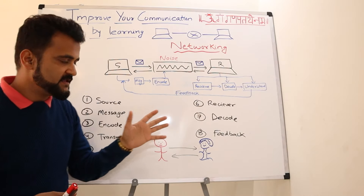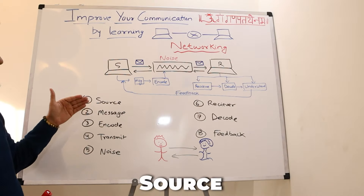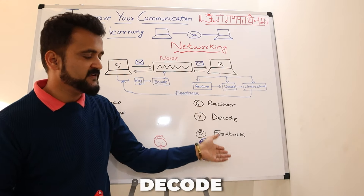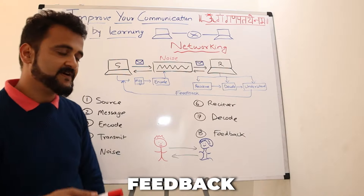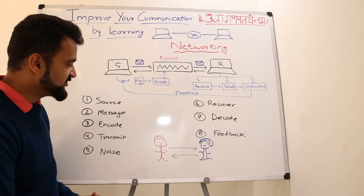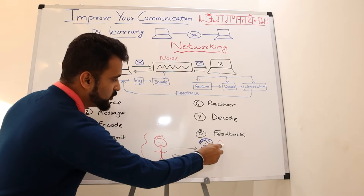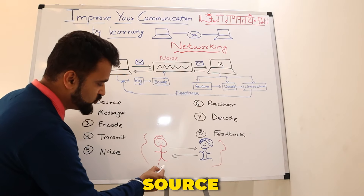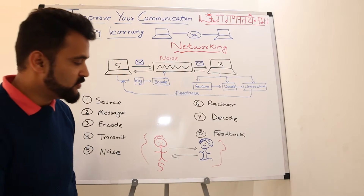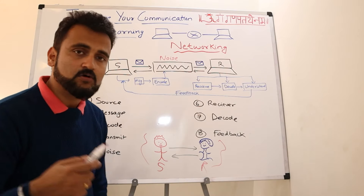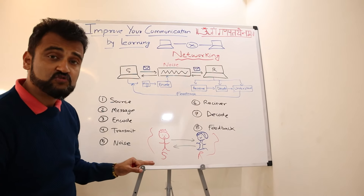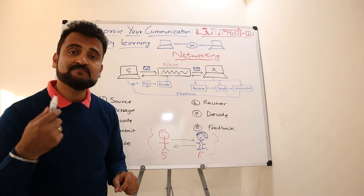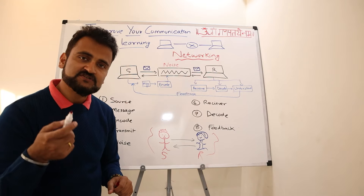All this is eight steps: Source, Message, Encode, Transmit, Noise, Receiver, Decode, Feedback. Now let's understand one by one what we mean when we replicate these into human conversations. You are the source — the one who is initiating the conversation — and the source has to decide what message needs to be conveyed.